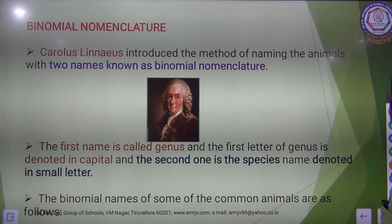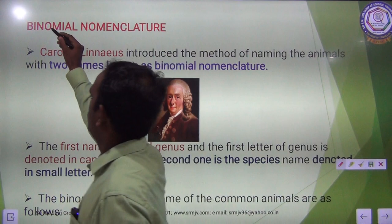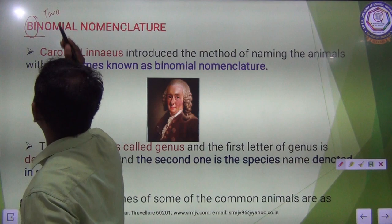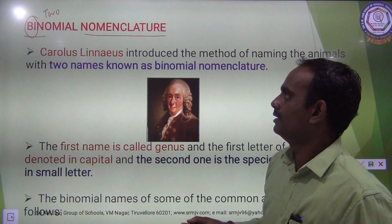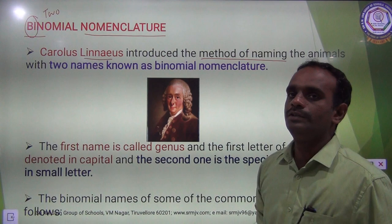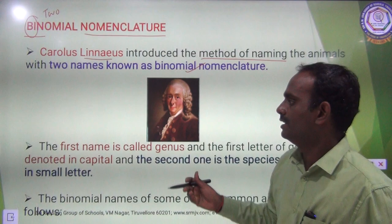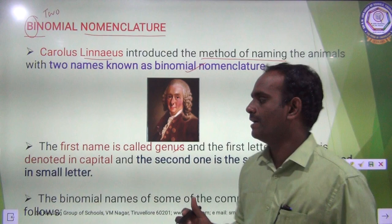Today we are going to discuss about binomial nomenclature. The word binomial — bi means two, nomenclature means name. Carolus Linnaeus, the famous scientist, introduced the method of naming animals with two names known as binomial nomenclature. In the two names, the first name is called Genus and the second name is called Species.